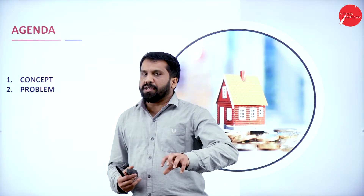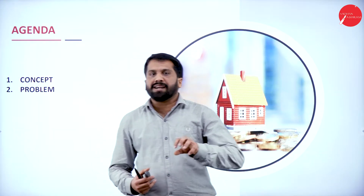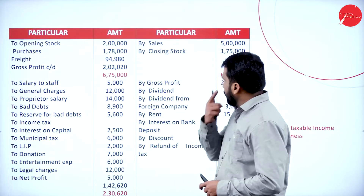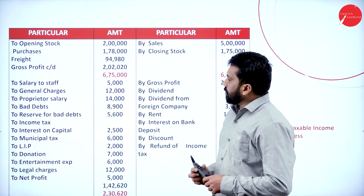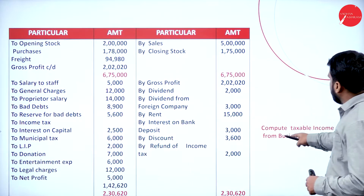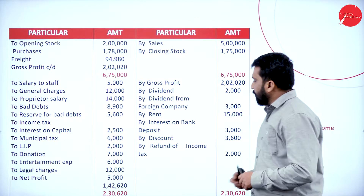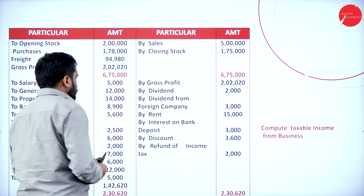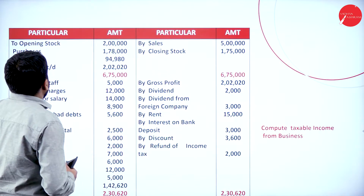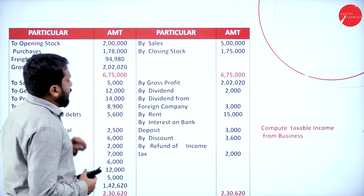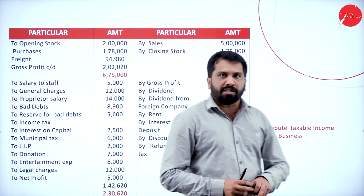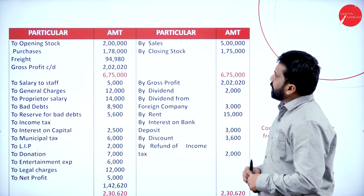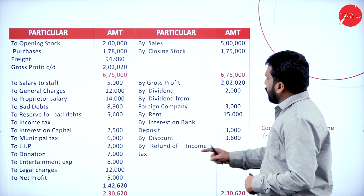The agenda is simple: we will understand concepts and work out one problem with adjustments. We are supposed to compute taxable income from business. The information we have includes particulars and amounts, such as opening stock and closing stock.